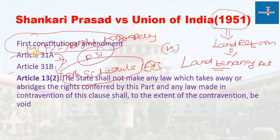According to Article 13, the state shall not make any law which takes away or abridges the rights conferred by this part — meaning the fundamental rights. Any law made in contravention of this clause shall, to the extent of the contravention, be void. So Parliament cannot abridge fundamental rights through ordinary law.